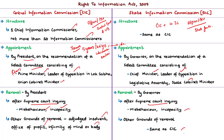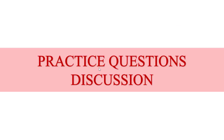The Governor can also remove members if they are adjudged as insolvent, if they engage in other paid employment during their term, or if they are unfit to continue due to infirmity of mind or body. From this article, we have seen the Supreme Court order with respect to the appointment of information commissioners, and a comparison of the Central Information Commission and the State Information Commission. To know more on the RTI Act of 2005 and detailed comparisons, please refer to our 12th October Hindu News analysis.